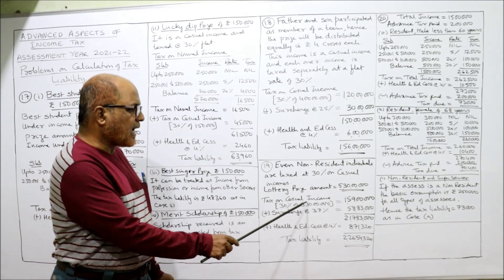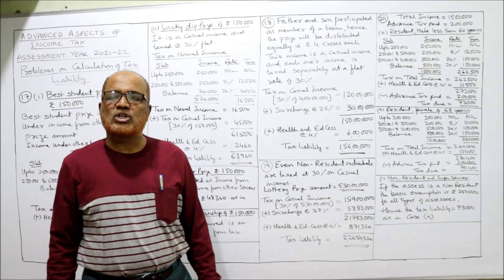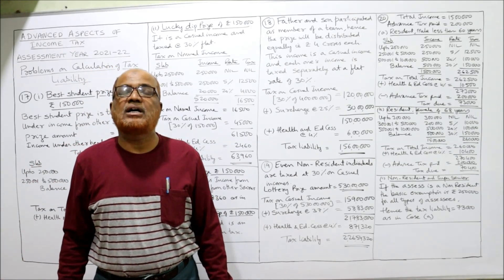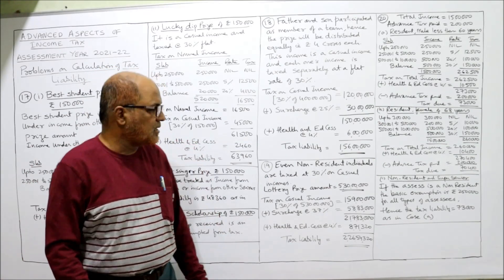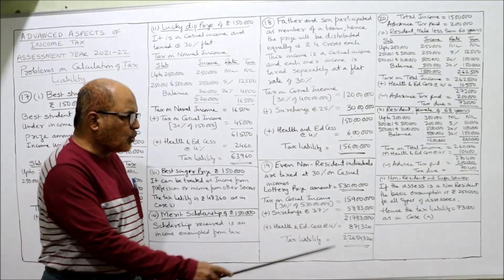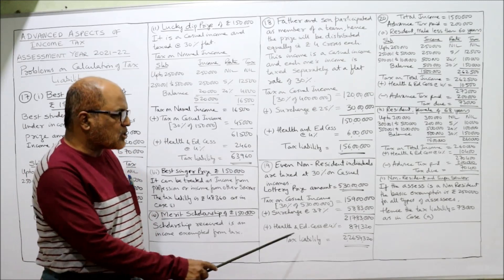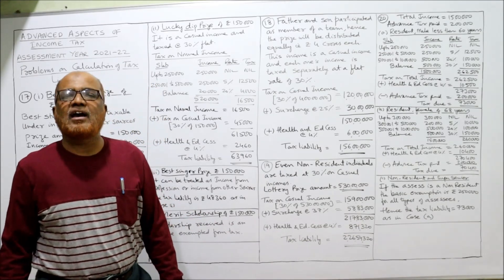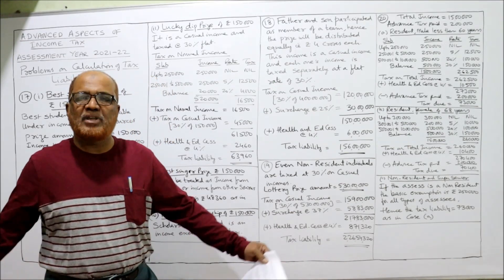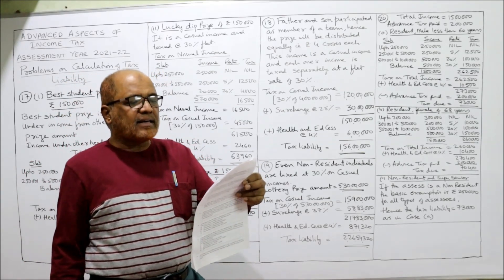Tax on casual income: 30% of five crore thirty lakh equals one crore fifty-nine lakh. The total income is more than five crore, so the surcharge rate is 37%. Thirty-seven percent of one crore fifty-nine lakh equals fifty-eight lakh eighty-three thousand. Adding up gives two crore seventeen lakh eighty-three thousand. Add 4% health and education cess of eight lakh seventy-one thousand three hundred. Final tax liability: two crore twenty-six lakh fifty-four thousand three hundred twenty.